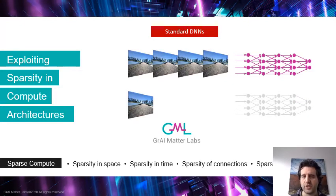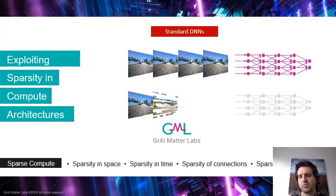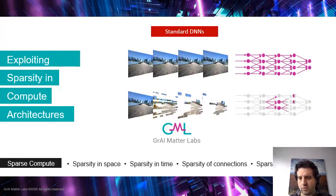What we propose is that for your first image, you actually do the processing of the whole image — you go through the whole network. But from then on, you actually compute the difference between frames and you only process the difference. So the second frame that you process, you're only going to process the events that represent the change that occurred from the one before. This means that you're going to do a lot less processing per frame, and we should get the same results — therefore exploiting sparsity in time.